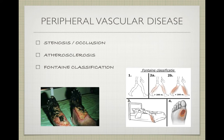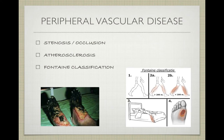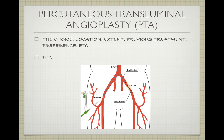In stage 3, the patient experiences rest pain — pain even when not walking. This is typically worse at night when lying down, because gravity no longer pulls blood to the extremities, so there is less blood in the limbs than when standing. There are also fewer distracting stimuli at night, so the patient focuses more on the pain, making it feel worse. Stage 4 is the final stage, in which the patient develops ischemic ulcers or gangrene as seen in the picture, and treatment by amputation may be required.